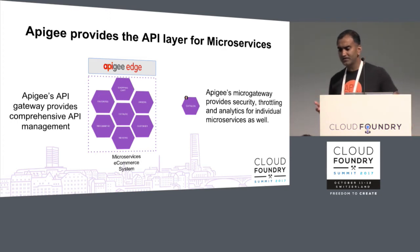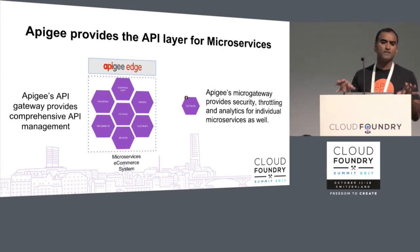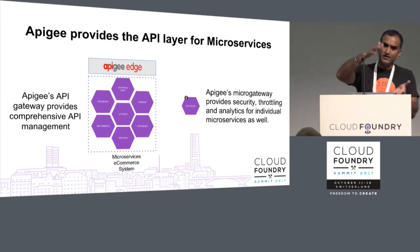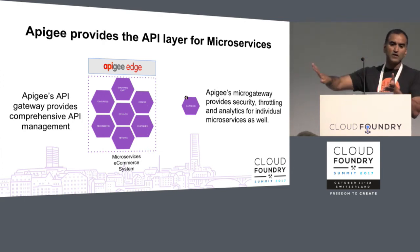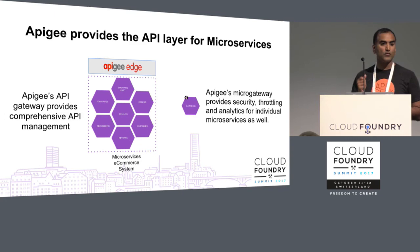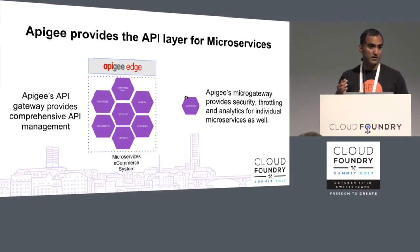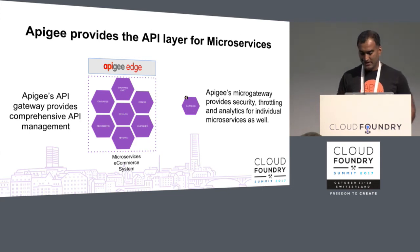Apigee provides the API layer for microservices in two different form factors. One is the Enterprise API gateway, traditionally used in a DMZ layer in front of Cloud Foundry or your legacy stack. You also have a smaller runtime called the Apigee Micro Gateway, which can be deployed close to your target machine where your microservice is running, providing security, traffic management, and analytics to those microservices.